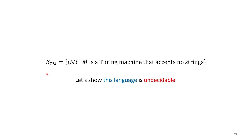I've defined a new language called ETM — the E stands for empty. We take an encoding of a machine M, and we accept it if that machine accepts no string, meaning the language of this Turing machine is the empty set. So the question is: can we tell, given an encoding of a Turing machine, if it's going to accept no strings? Let's show that ETM is an undecidable language — we can't do this in a decidable way.